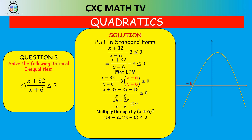Placing the roots on the graph and shading where Y is less than or equal to zero, the solution is X less than negative six or X greater than or equal to seven. We write X strictly less than negative six because substituting X equals negative six would make the expression undefined.